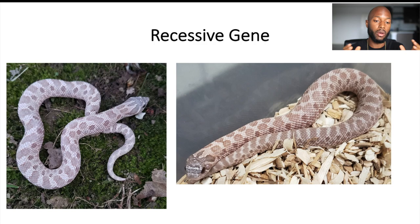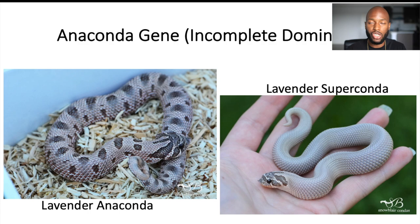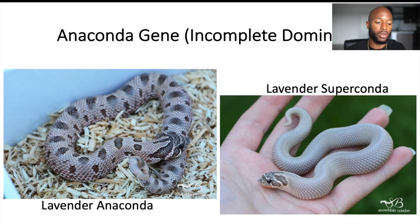Now let's get into combining this recessive lavender gene with an incomplete dominant gene. We're going to discuss the anaconda and the arctic gene — those are the two incomplete dominant genes we know of in hog nose snakes. Starting with the anaconda: the anaconda gene is basically a pattern reduction. Because it's incomplete dominant, you only need one copy to have a pattern reduction — that's the lavender conda. If you mix the lavender gene with two copies of the anaconda gene, you get a full pattern reduction: the lavender super conda, which has pattern only on the head and the rest of the body is patternless.